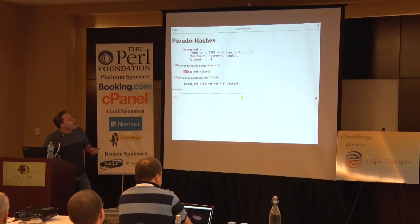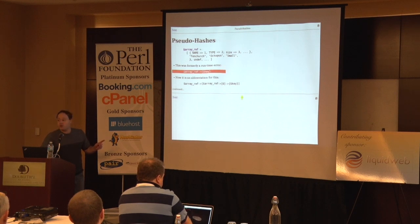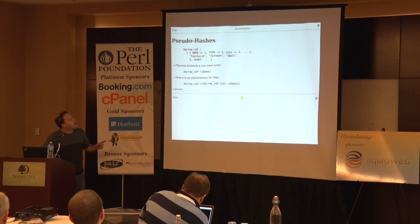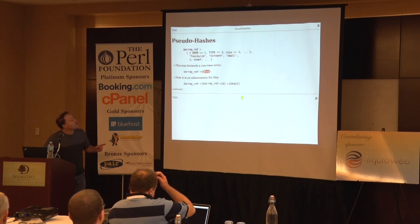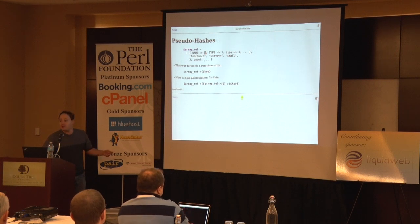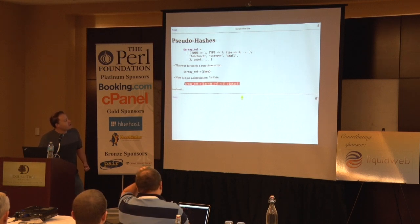It used to be that writing arrow-curly-braces-key on a non-hash was a runtime error. But now Perl will check: maybe this thing is a pseudo-hash. It will look in the first element to see if there's a hash there, and if there is, it'll look up the key in that hash to find the slot number and use that to access the array. So Perl would detect at runtime that what would normally throw an error will actually be executed as if you had written an array access.